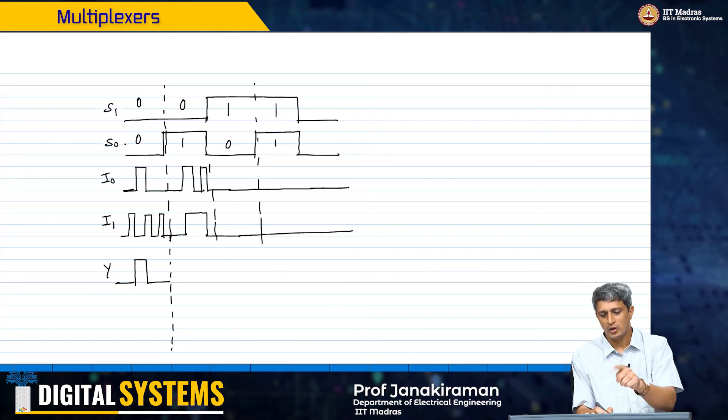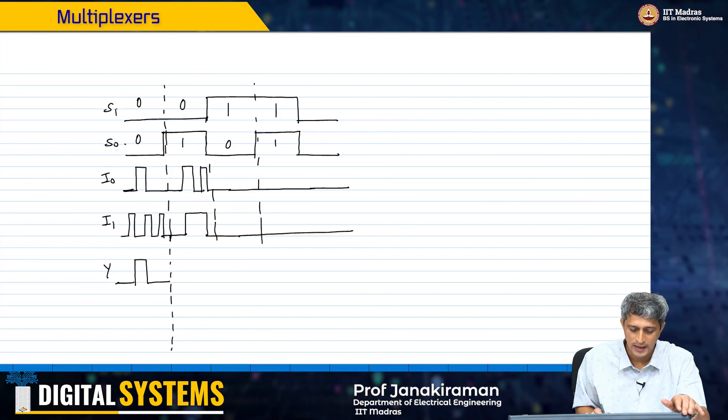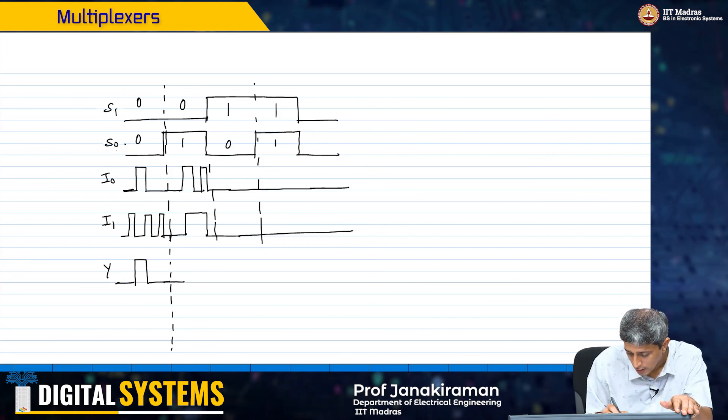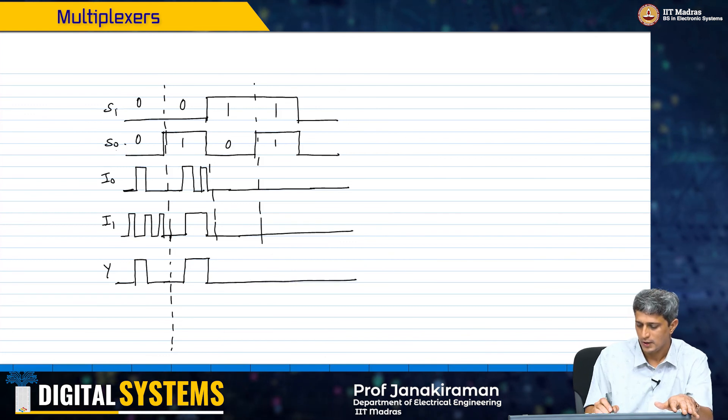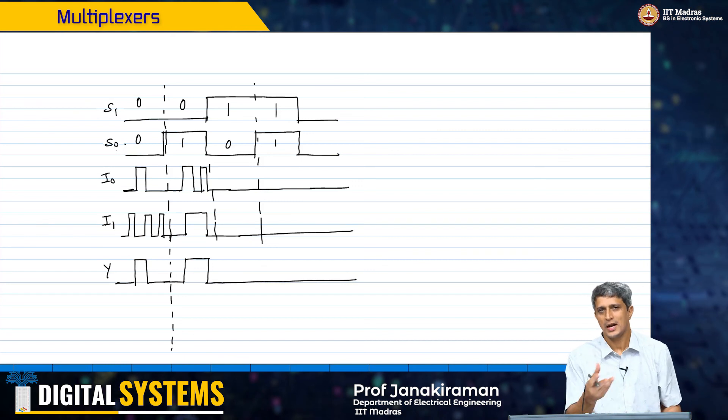When the input select signal switches to 0 1, s1 is 0 and s0 is 1, then the output will simply follow i1. It will ignore what is happening on the other inputs and simply appear like this. I am not showing for the case of i2 and i3 but that is also a very straightforward extension.